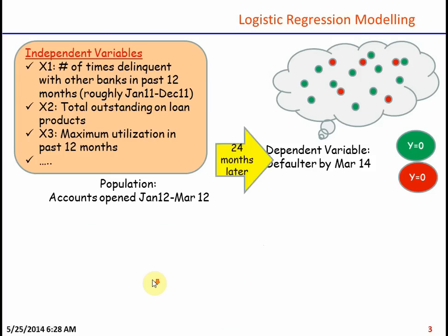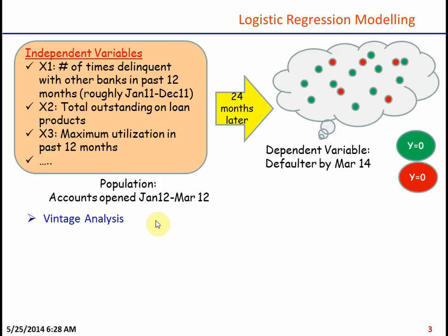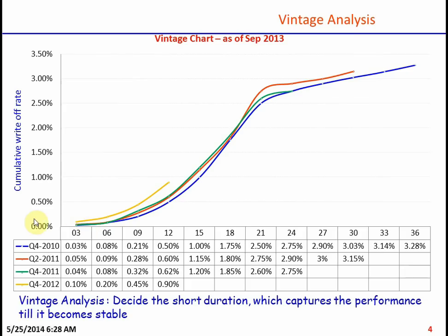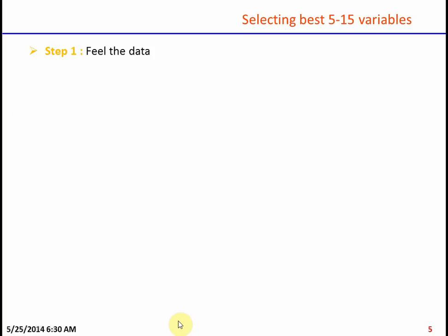Though it looks simple, deciding on the 24-month window requires vintage analysis. Vintage analysis takes all accounts that are open and tracks their performance after 3 months, 6 months, 9 months, 12 months, across different cohorts like Q4 2010, Q2 2011, Q4 2011, and Q4 2012. Based on that, you select the shortest duration that captures performance until it becomes stable — such as 18, 24, or 27 months.